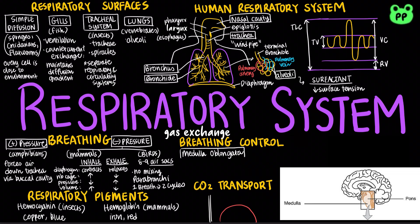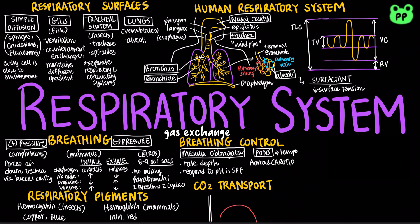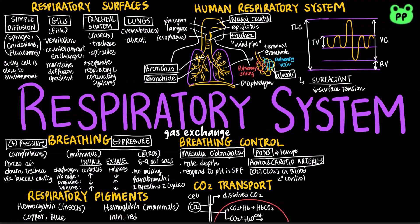In humans, the medulla oblongata regulates the rate and depth of breathing in response to pH changes and carbon dioxide levels in the cerebrospinal fluid. The pons regulates the breathing tempo, and sensors in the aorta and carotid arteries monitor oxygen and carbon dioxide concentrations in the blood, exerting secondary control over breathing. Carbon dioxide from respiratory cells diffuses into the blood and is transported either in the blood plasma, bound to hemoglobin, or as bicarbonate ions, which are synthesized by carbonic anhydrase.